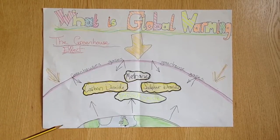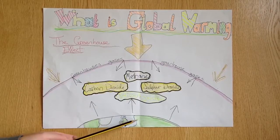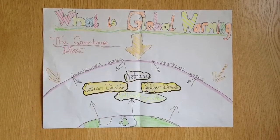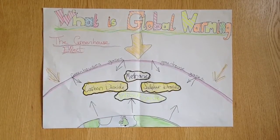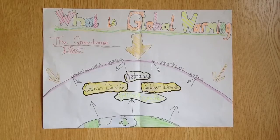Also, deforestation reduces the number of trees available to convert carbon dioxide to oxygen. So carbon dioxide is increasing, and that has been linked to the temperature rise.